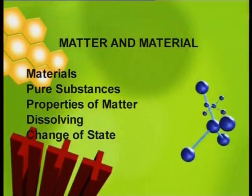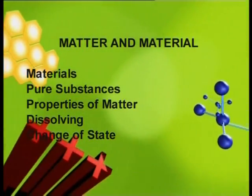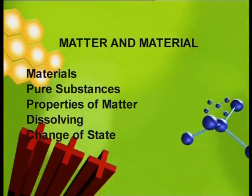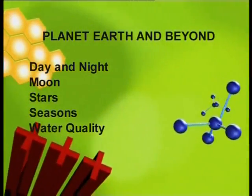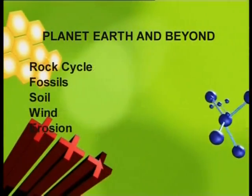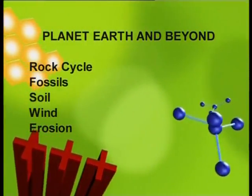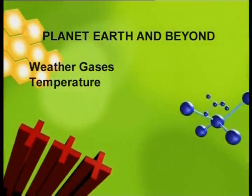In the third aspect, which is matter and materials, we look at physical properties of matter — what is matter, how does matter dissolve, what are the phase changes. And in the last aspect, which is planet Earth and beyond, we look at things like the seasons, day length, atmosphere, wind, rocks, soil, fossils, erosion — so a whole range of activities.